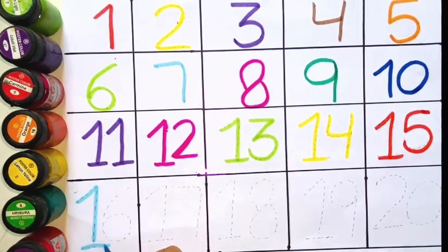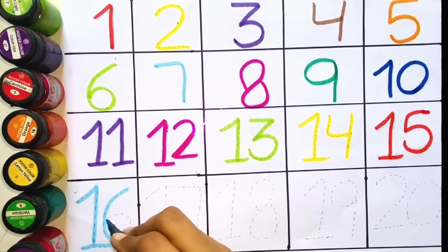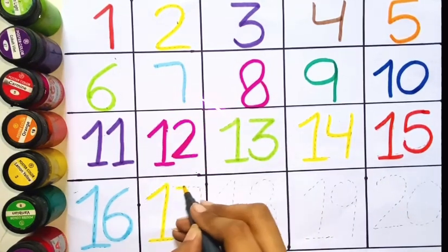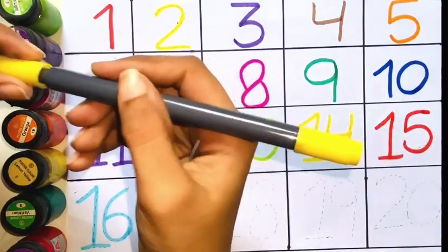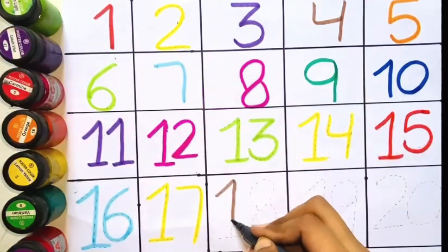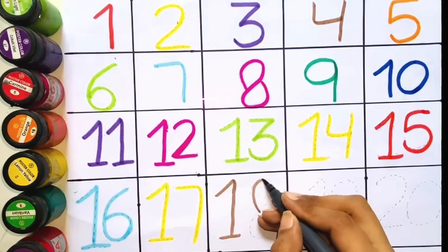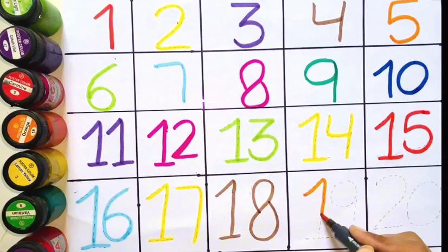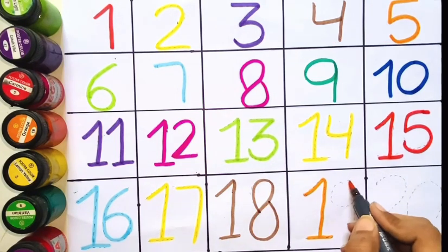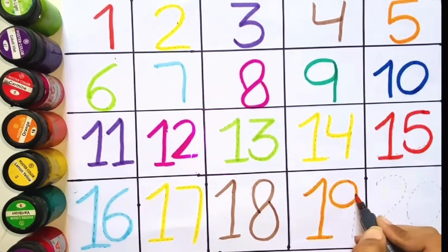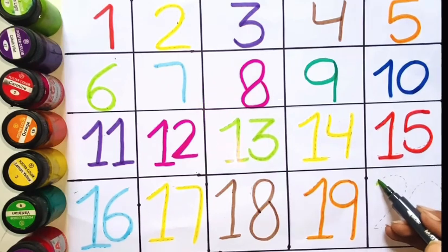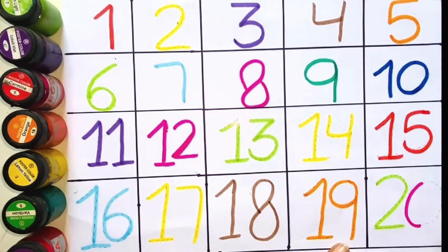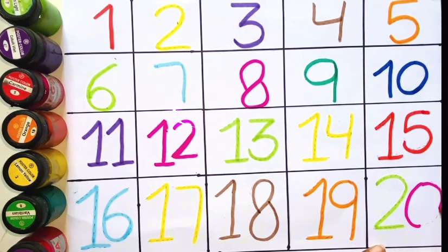Sixteen. Blue color. Seventeen. Yellow color. Eighteen. Brown color. Nineteen. Orange color. Twenty. Green color. Pink color.